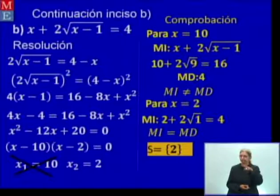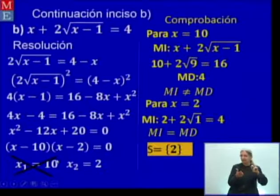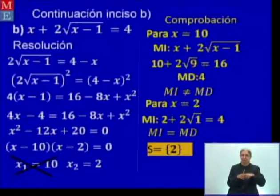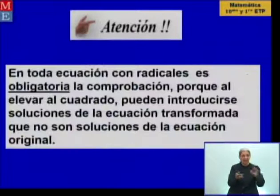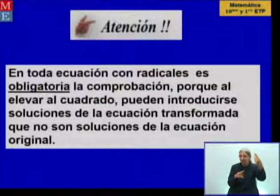Observen: cuando dijimos aislar la raíz, es el término que contiene la raíz. Por eso queda aquí 2 raíz cuadrada de X menos 1. Obtuvimos soluciones diferentes en miembro izquierdo y miembro derecho, quiere decir que el número 10 no satisface a la ecuación original, que es donde siempre debemos comprobar. No sucede así con el 2, que satisface a la ecuación. Es importante que revisen en el libro los pasos. En toda ecuación con radical es obligatoria la comprobación, porque al elevar al cuadrado pueden introducirse soluciones de la ecuación transformada que no son soluciones de la ecuación original: las llamadas raíces extrañas.